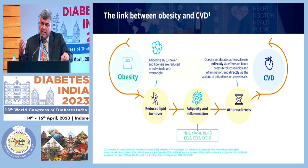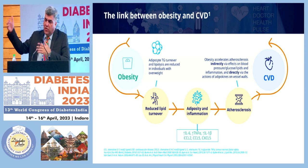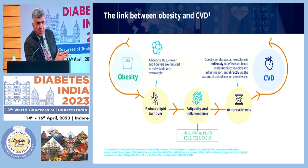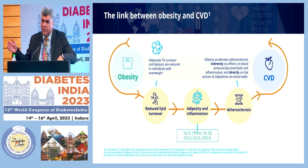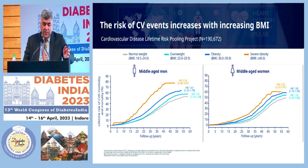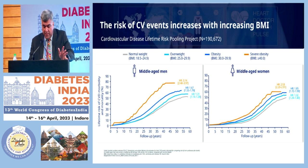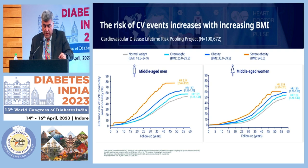All of that contributes to worsening atherosclerosis, with obesity accelerating atherosclerosis indirectly via effects on blood pressure, glucose, and lipids, and directly through the actions of adipokines on the vascular wall. Understanding these mechanisms makes clear that the solution does not lie in what you do after an event — it lies much earlier, in preventing or managing obesity. The risk of cardiovascular events increases with increasing BMI in both men and women, a little more pronounced in middle-aged men.